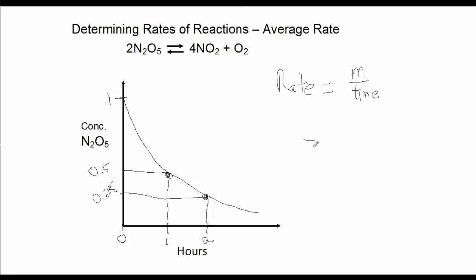In this case, we'll have 0.5 molar subtracted by 0.25 molar. And then, we have to match up the corresponding times, because 0.5 corresponds to one hour, and 0.25 corresponds to two hours. So, it's 1 minus 2.